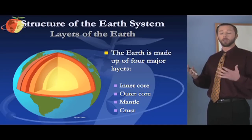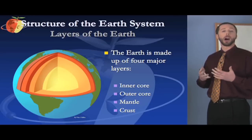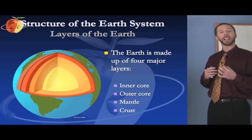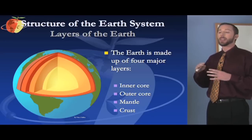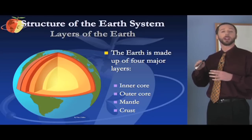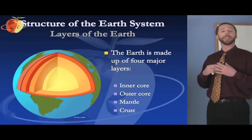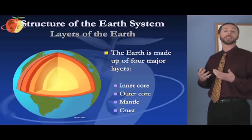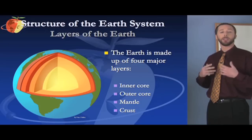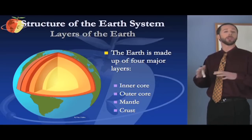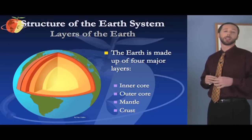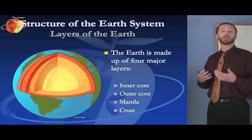Outside that outer core we have the mantle. The mantle is made of rock — it's not liquid rock, but it's not exactly solid either; it's more of a viscous, malleable solid. The crust, the thin outer layer, moves on top of that mantle. The movement on top of that mantle is what creates things like seismic activity, earthquakes, and the collision of plates as those plates shift on top of the mantle. The crust is very thin compared to the other three layers of the earth.